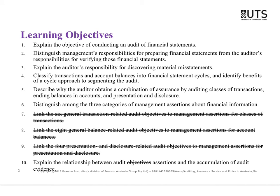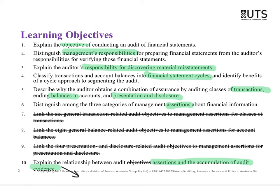Today we're going to look at the objective of an audit — why we do an audit. We'll look at management's responsibilities, and my responsibility for checking whether financial statements are true and fair and giving an opinion. We'll examine financial statement cycles, how we get assurance by looking at different transactions, account balances, and the presentation of reports. Then we'll look at assertions and how we use them to gather audit evidence that will help us generate our opinion.